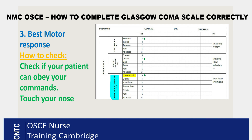Moving on to best motor response — again, without making it complicated, all you need to check is whether your patient can obey commands. The first row in the best motor response section is for obeying commands. Ask your patient to do something simple — for example, 'Can you touch your nose?' or 'Can you put your right hand up?' Just one command. If they follow it, they are obeying commands, and you give them a score of six. In the exam, your actor will already be answering your questions, so you know they'll be obeying commands, but you still need to check it.